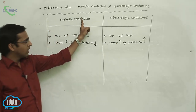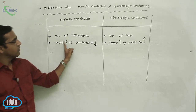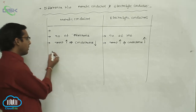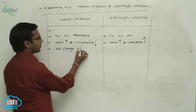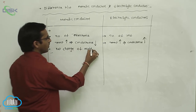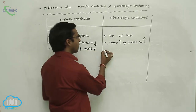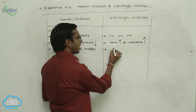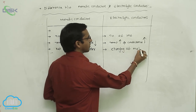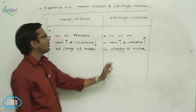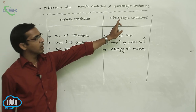In metallic conductors, temperature increases means conductance decreases — temperature is inversely proportional to conductance. In metallic conductors, there is no change of matter, meaning the chemical substance does not undergo decomposition. In electrolytic conductors, the chemical substance undergoes changing of matter. So these are the differences between metallic conductors and electrolytic conductors.